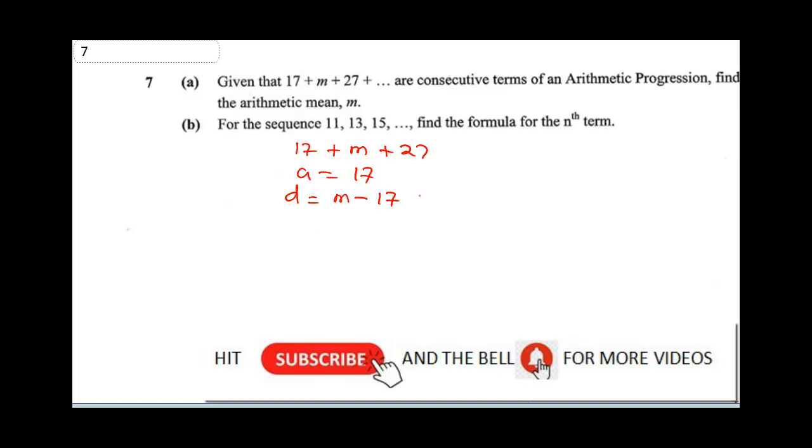And also, our common difference can also be 27 minus M. So from here, we can equate the common difference. Since this is equal to this, we can now say M minus 17 is equal to 27 minus M.